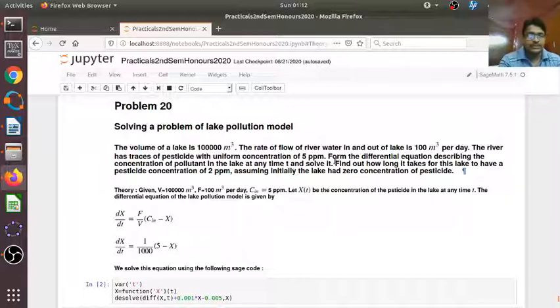The problem basically says that we have a lake whose volume is constant, supposed to be constant in the lake pollution model. It's 1 lakh meter cube. And there is a river which is flowing in and out of the lake. And the rate of flow of river is 100 meter cube per day. That means 100 meter cube of water is flowing in from the river and 100 meter cube per day is leaving out also.